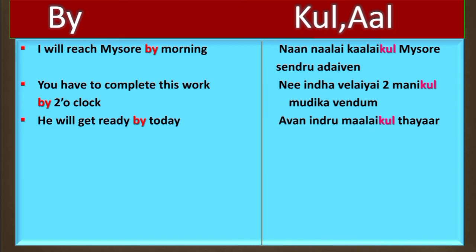The third example is: 'He will get ready by today evening.' In Tamil: Avan indra malikkuul thayar agi duvan. Avan means he, indra malikkuul means 'by today evening', thayar means 'get ready', and agi duvan means 'will get'.